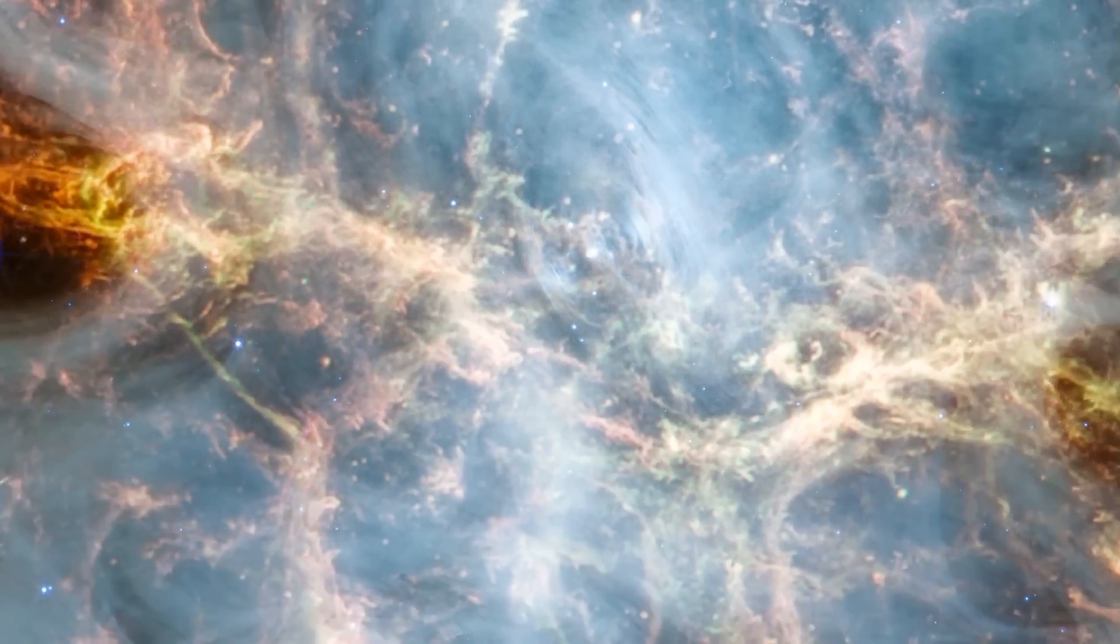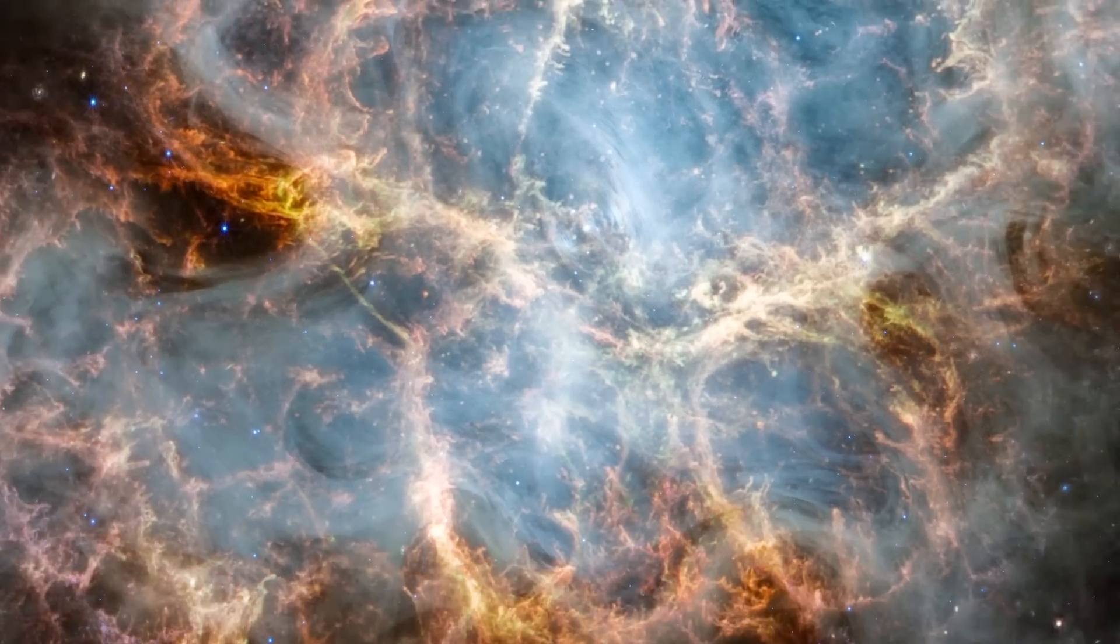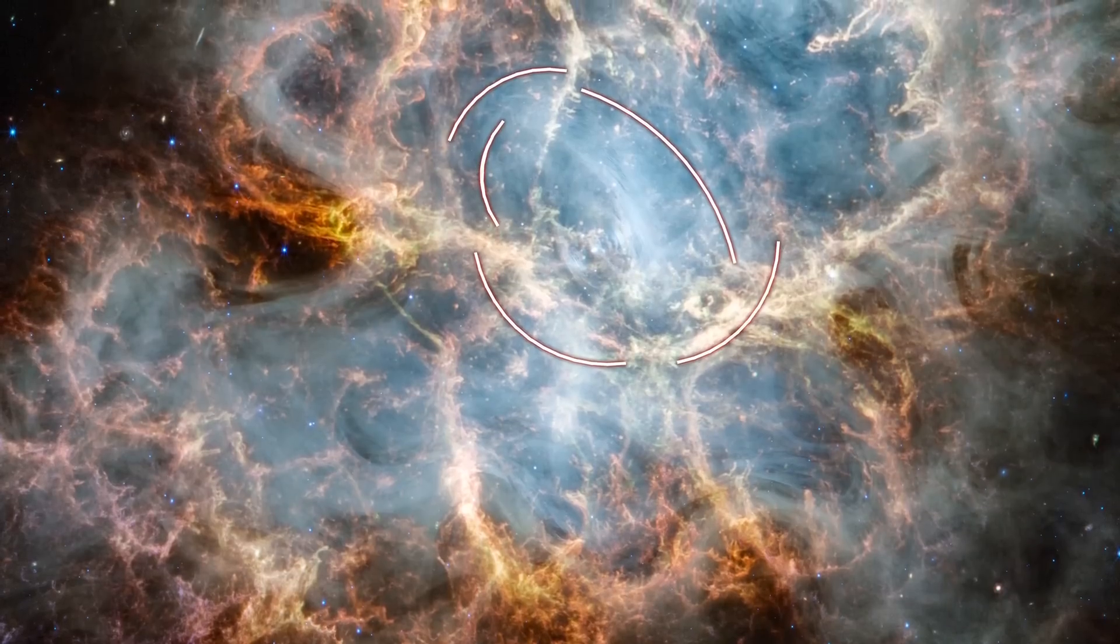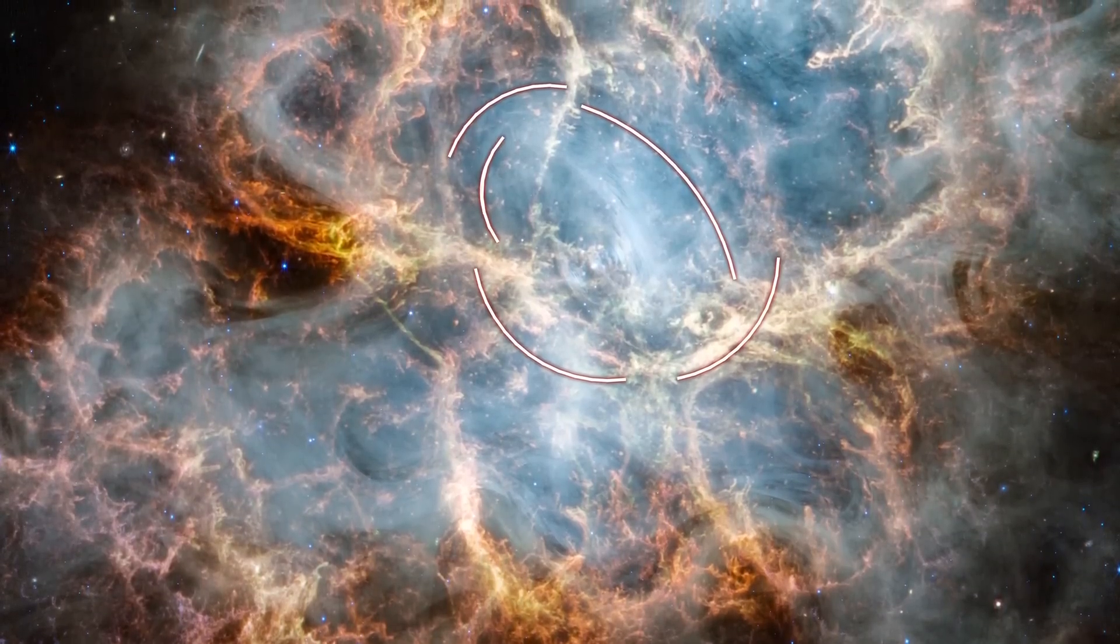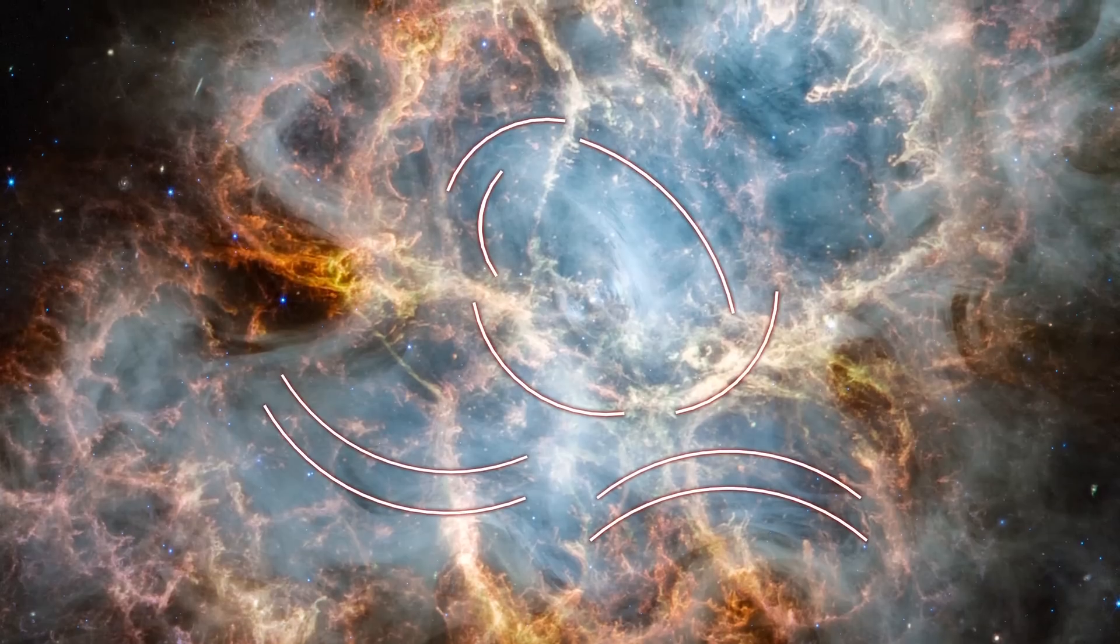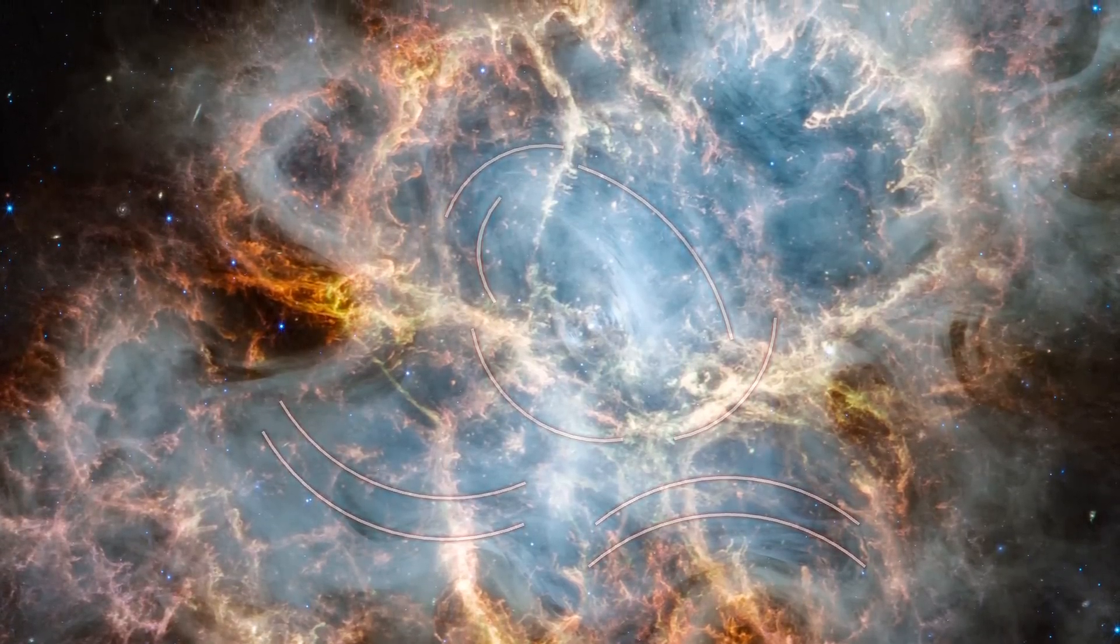These thin, bright lines trace the shape of the magnetic field around the pulsar, which give the nebula its form. Fast-moving particles spiral around the strong magnetic field lines and produce a type of light called synchrotron emission, appearing here as smoke-like material around the Crab's interior.